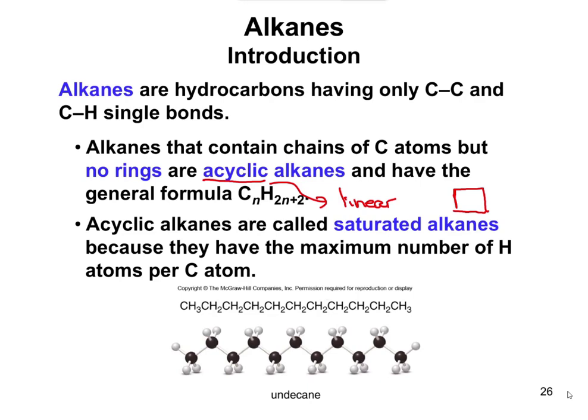it has 1, 2, 3, 4, 5, 6, 7, 8, 9, 10, 11 carbons — so that would be C11. How many hydrogens are there? We could count them individually, but since we know it's an acyclic alkane, we can say it's going to be 2n+2, which would be H24. So you double it and then add two extras.